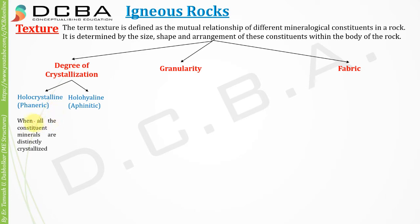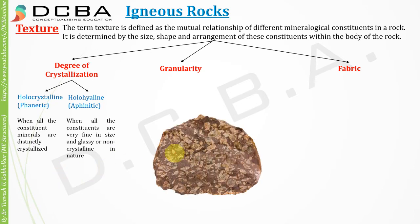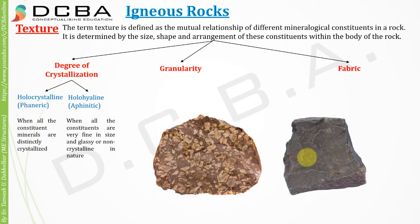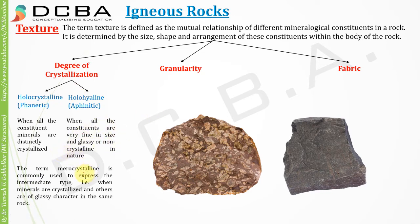When all constituent minerals are distinctly crystallized, they are called hollocrystalline rocks. When all constituents are very fine in size and glassy or non-crystalline in nature, they are called hollohaline. The intermediate term is merocrystalline, used when some minerals are crystallized and others are glassy.